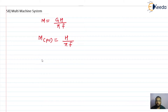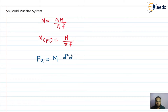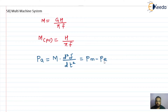From the previous lecture where we obtained the swing equation, we wrote it as: Pa = M × d²δ/dt², which equals Pm minus Pe. As it is accelerating power, it will be in megawatts.